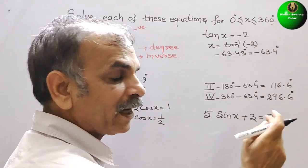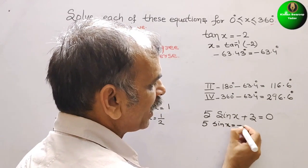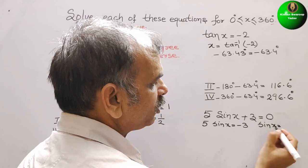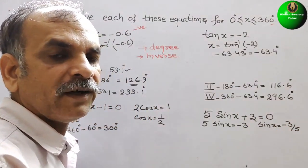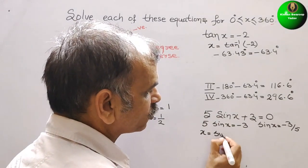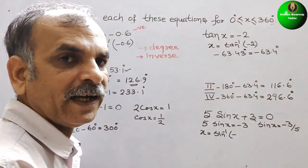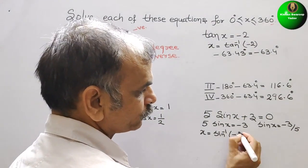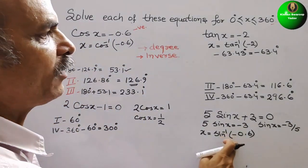Now, 3 comes to the right side as -3. So 5sin x = -3, which gives sin x = -3/5. Dividing, we get -0.6. This value is not a standard value in our sin table, and it is negative.